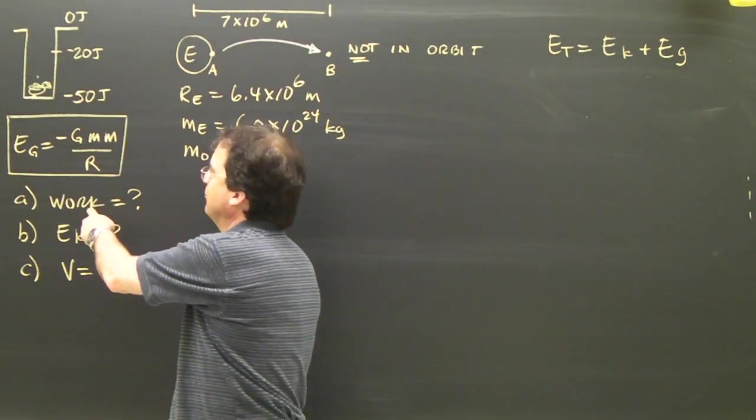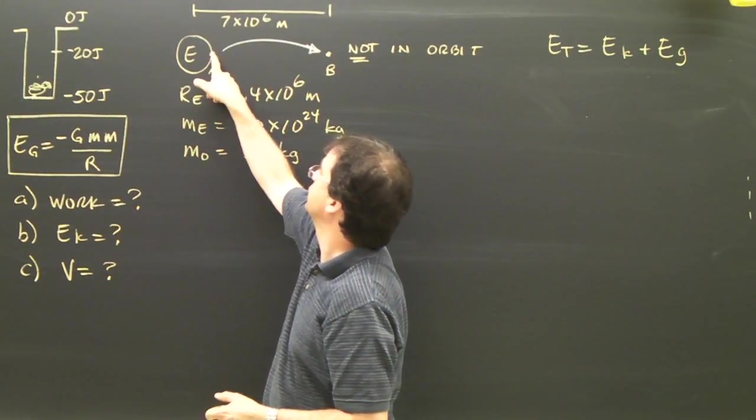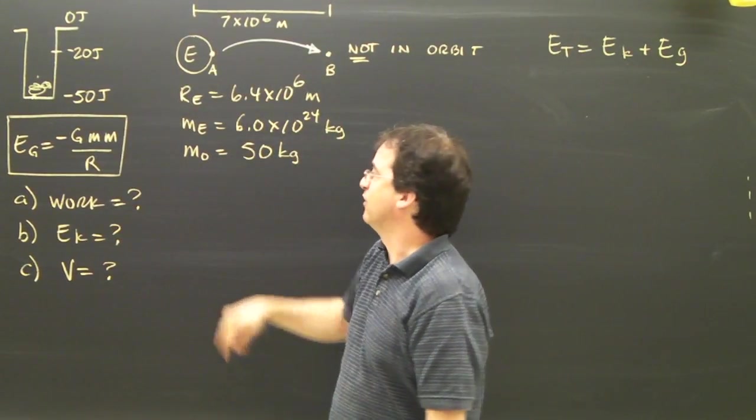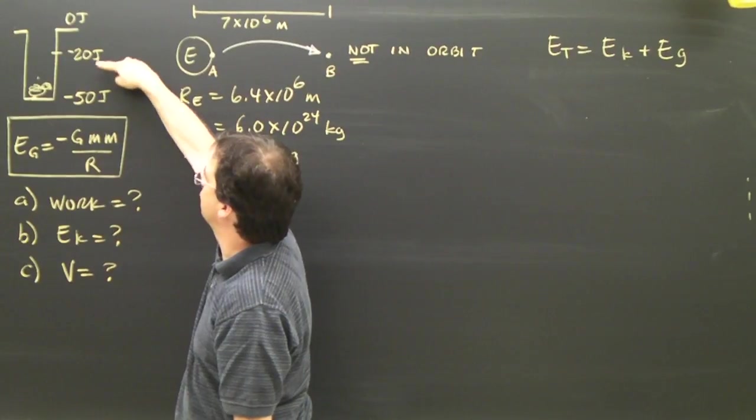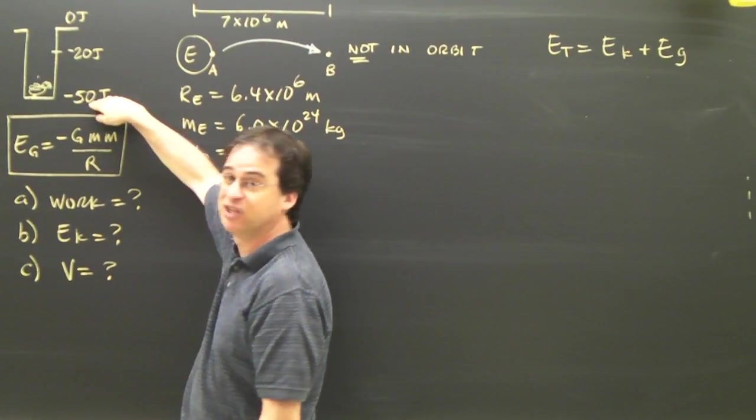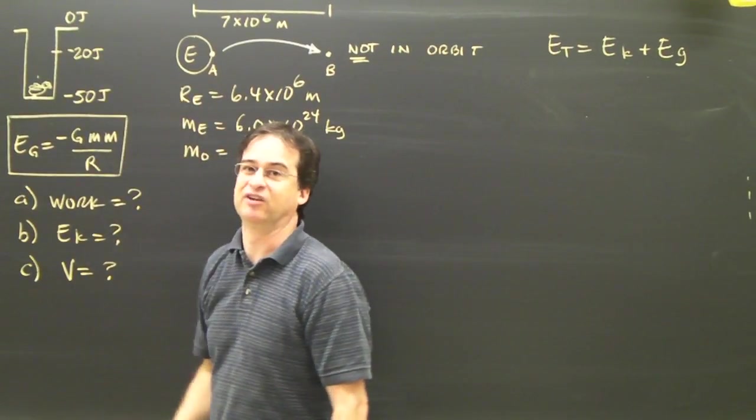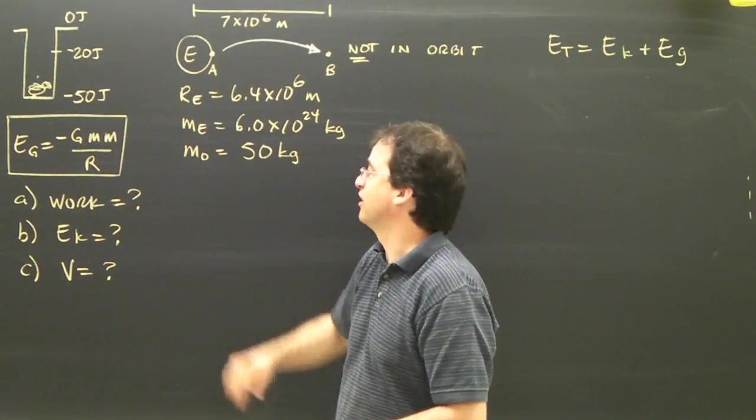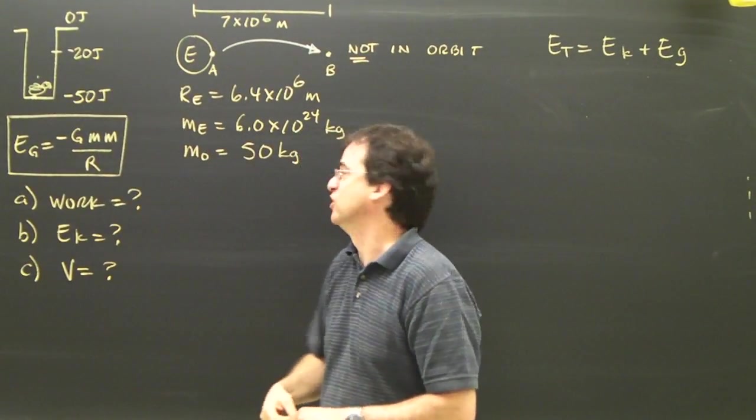So question A, how much work do I have to do to get the object to go from here to here? That's like saying how much work do I have to do to get the object going from here to here? I need to know how much energy it has here, how much energy it has there, and I need to find how much I have to add to this to get to that.